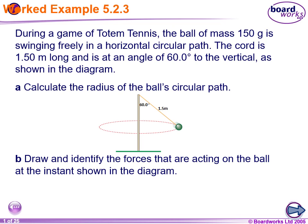All right, so during a game of totem tennis, the ball of mass 150 grams is swinging freely in a horizontal circular path. The chord is 1.5 meters long and is at an angle of 60 degrees to the vertical as shown in the diagram. Calculate the radius of the ball's circular path. So what we are looking for is that radius.